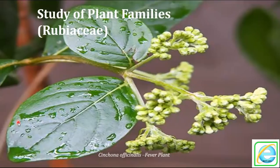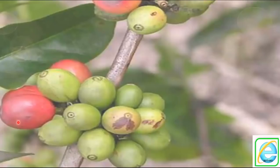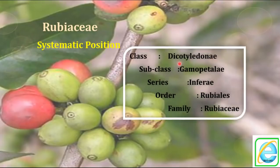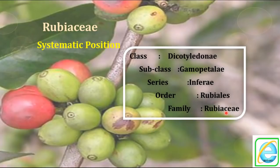Now we will discuss the systematic position of the Rubiaceae family. The class is Dicotyledon — two cotyledons are present. Subclass is Gamopetalae — petals are united. Series is Inferae, meaning the ovary is inferior. Order is Rubiaceae because of the opposite type of leaves or simple leaves, and family is Rubiaceae, with presence of stipules such as interpetiolar and intrapetiolar.